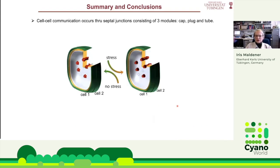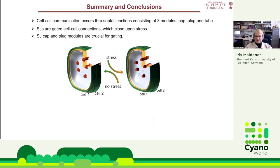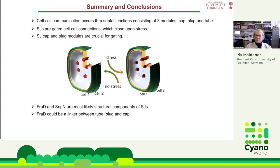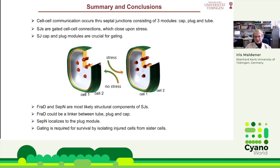To summarize: cell communication occurs through septal junctions, which consist of three modules — the cap, the plug, and the tube. The septal junctions are gated connections which close upon stress and reopen when the stress is gone. The cap and plug modules are crucial for gating, as shown with mutants lacking these modules. FRAD and CEP-N are most likely structural components of septal junctions — FRAD could be a linker between tube, plug, and cap, and CEP-N localizes to the plug module. Gating is required for survival by isolating injured cells from sister cells.